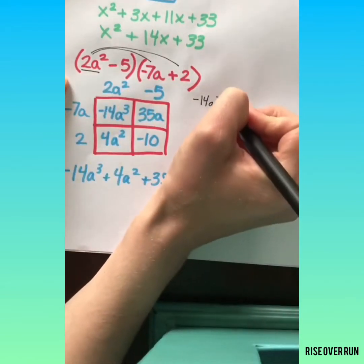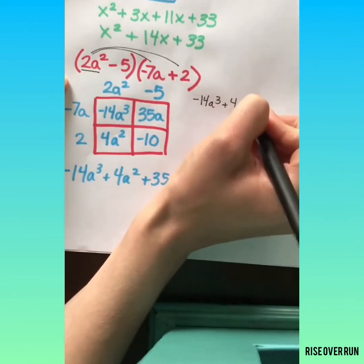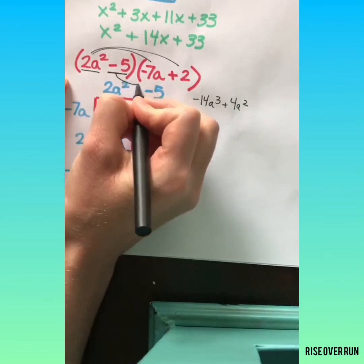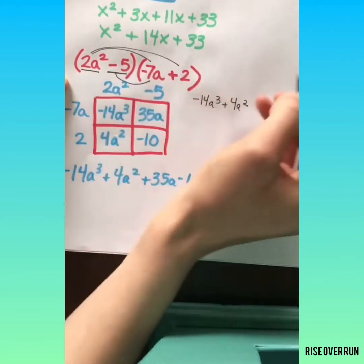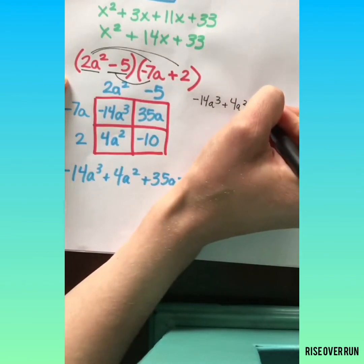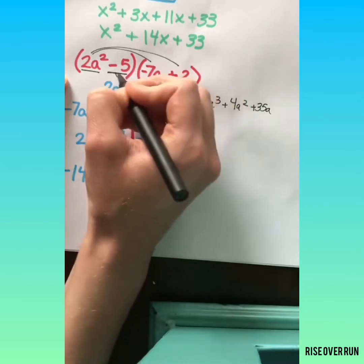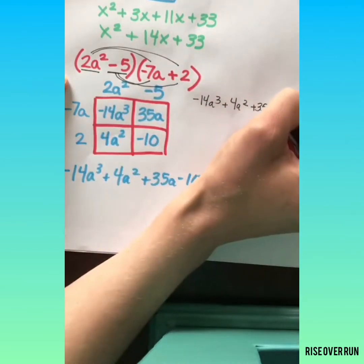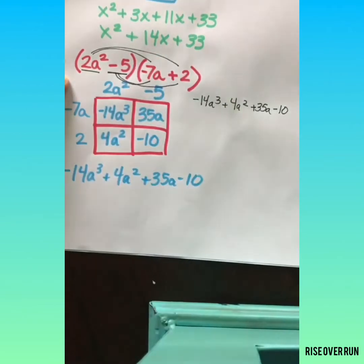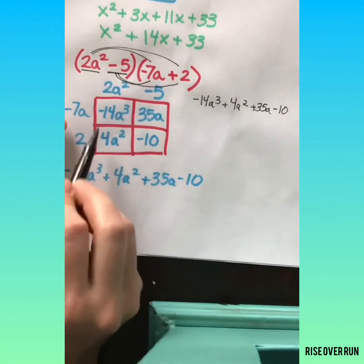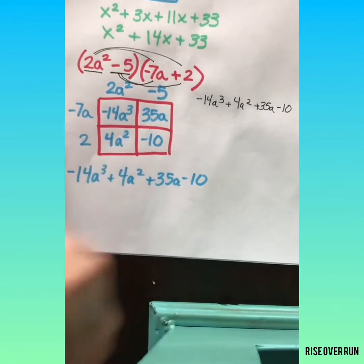2a squared times 2. Now I move on to my second term. This time I'm going to draw lines underneath. Negative 5 times negative 7a is positive 35a and negative 5 times a positive 2 is a negative 10. Either way works. If you tend to not be the neatest then I prefer having this nice setup so you can see everything nice and clear.